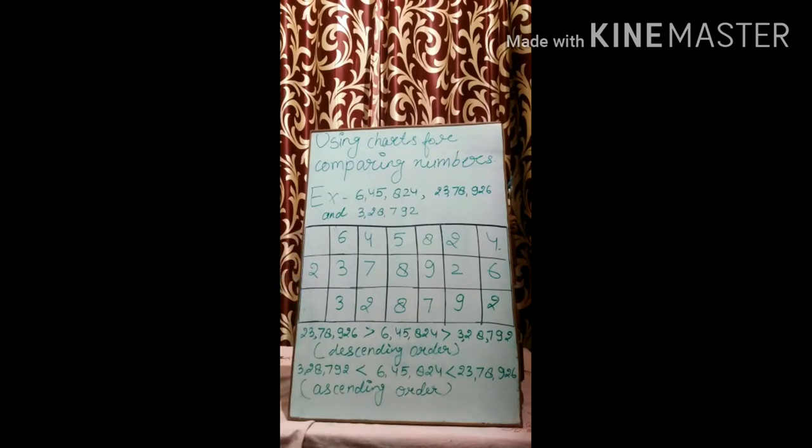And we have to arrange the same number in ascending order. Ascending order means from smallest to greatest number. This number is smallest, then we will write first this number, then this number, and last we will write this number.